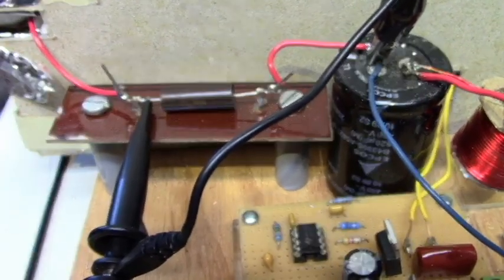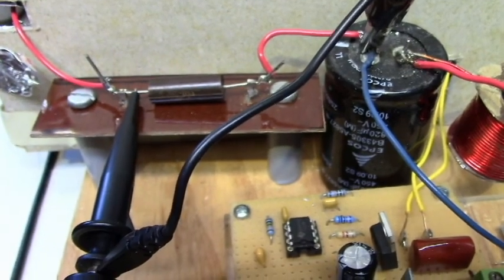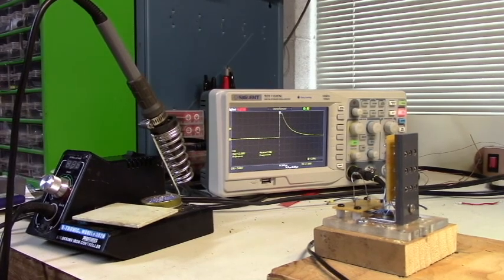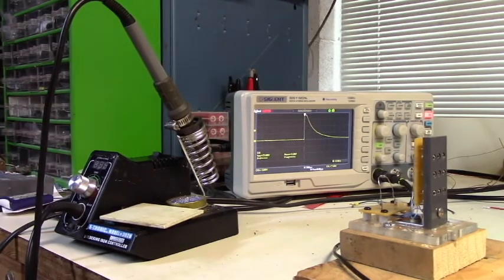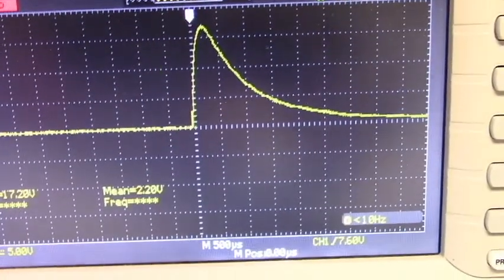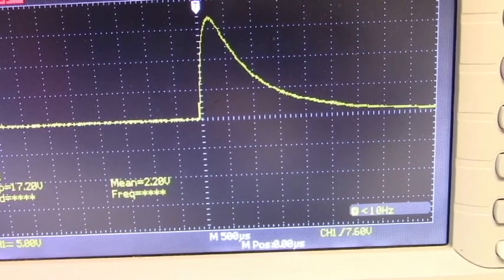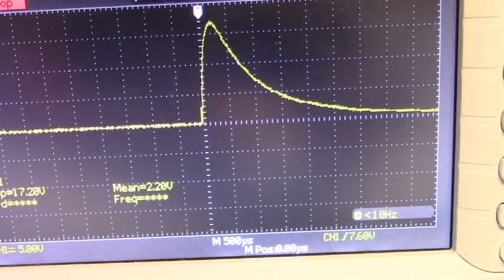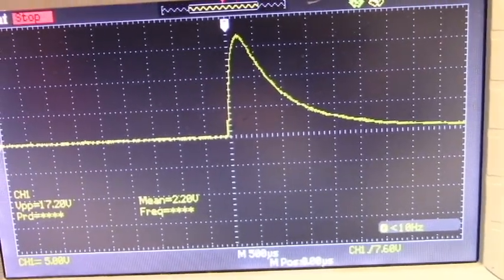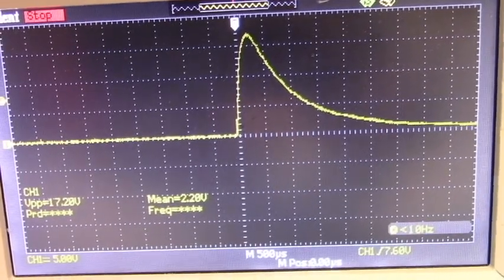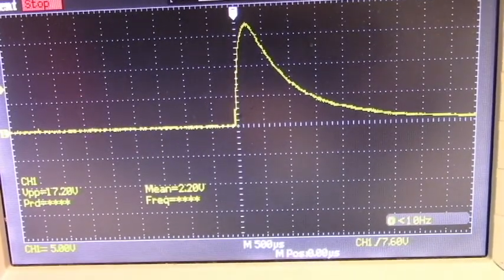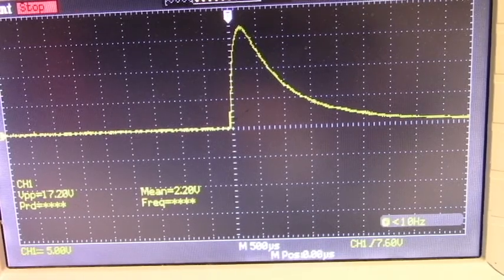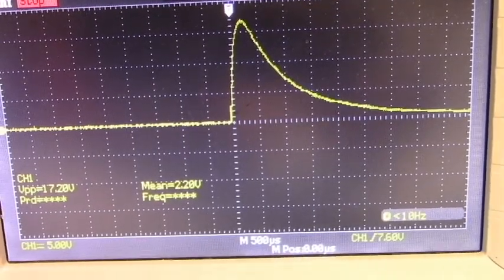Here is the test setup using a 0.07 ohm resistor for a current sense. So here's a current reading with a 0.07 ohm current sensor resistor. Peak volts is 17.2 volts. That gives us a peak current of like 240 amps. Scope is set at 500 microseconds per division. And this is using a 820 microfarad capacitor.